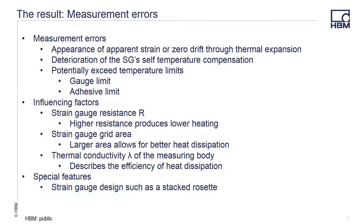Excessive heat in the gauge can manifest itself with a zero drift on the gauge. If the amount of heat generated is excessive, the gauge could run into self-compensation issues and perhaps cause other issues such as exceeding the adhesive temperature limit. To limit this, you can choose a higher resistance gauge as higher resistance produces lower heat. You can increase the physical size of the grid as the larger area allows for better heat dissipation. You can also change the measuring body to a material with better thermal conductivity, though that obviously isn't possible in most cases. You can also avoid some issues by not using special gauges like stacked rosettes, which have more difficulty in dissipating heat.